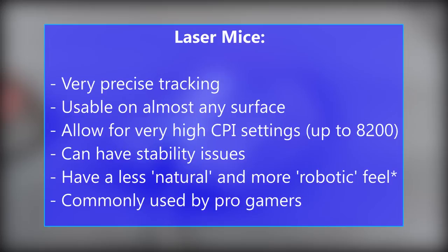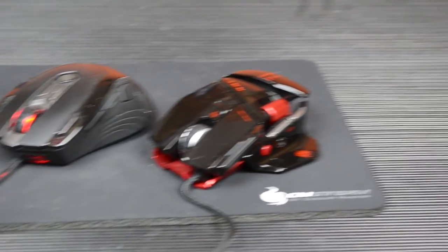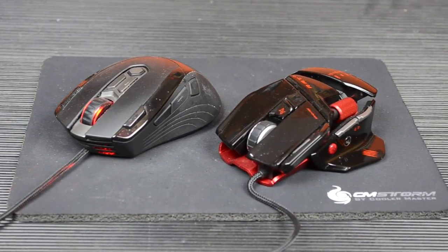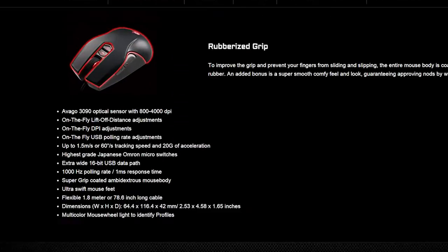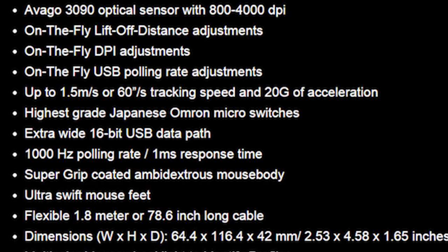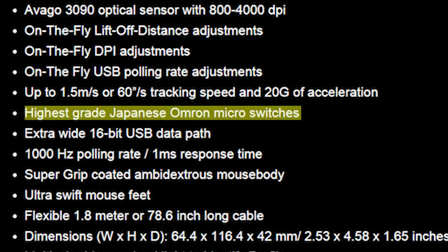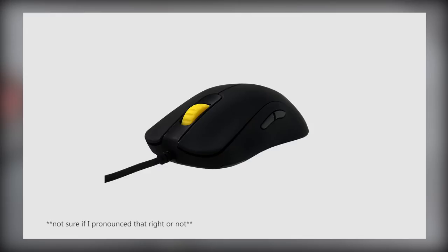However, laser mice can have acceleration and/or stuttering issues. Newer laser sensors from companies like Avago do claim to have stopped this, although the jury is still out on that one. Another fairly subjective aspect is the actual switches used. Most decent gaming mice nowadays use Omron switches, which are widely regarded to be the best, but they're not the only ones. This Zowie mouse, for instance, uses Huano switches which tend to have a little bit more resistance than Omron ones.